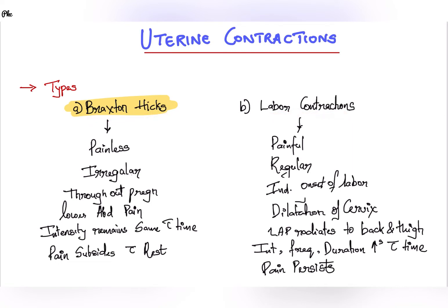Braxton Hicks contractions are usually seen throughout the pregnancy. These contractions are painless and irregular and usually localized to the lower abdomen. The intensity of contraction remains the same throughout the pregnancy, and the pain subsides with rest and sedatives.